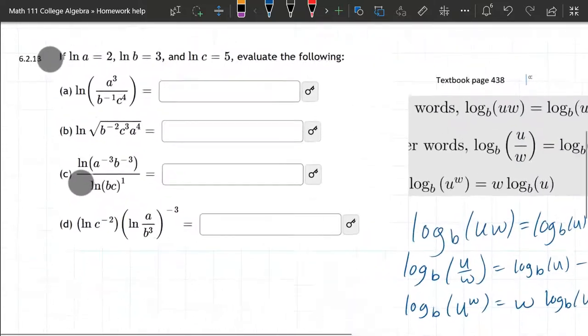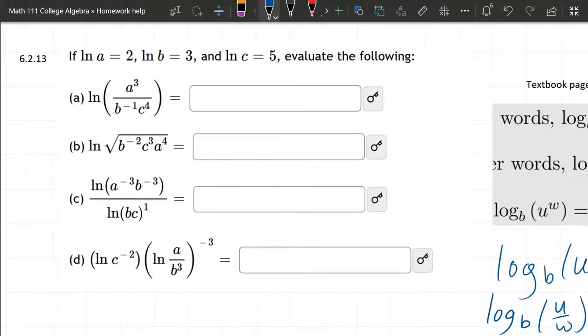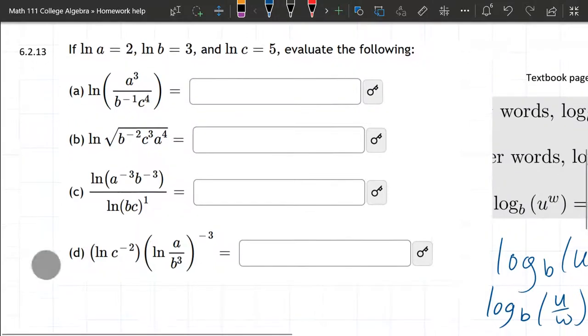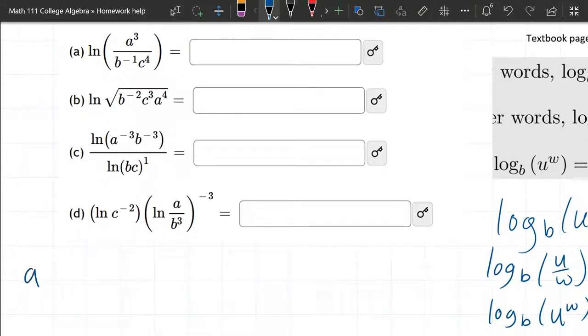The other thing to notice, we're given information, we don't know what A is, but we know log, or natural log of A is 2. Natural log of B is 3, and natural log of C is 5. So let's go ahead and start this first one right here.